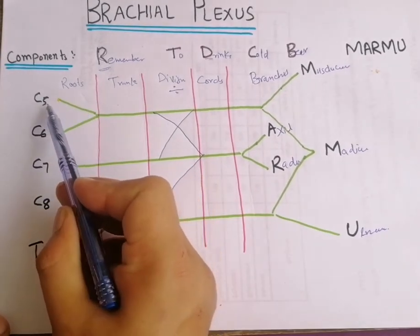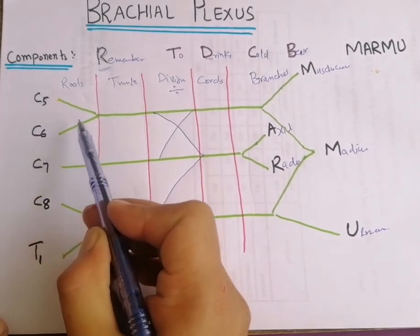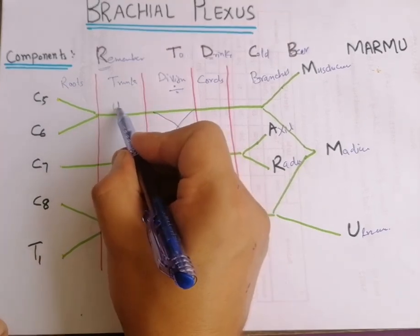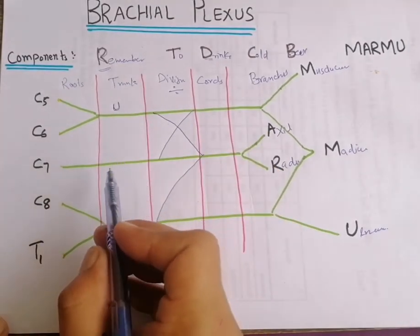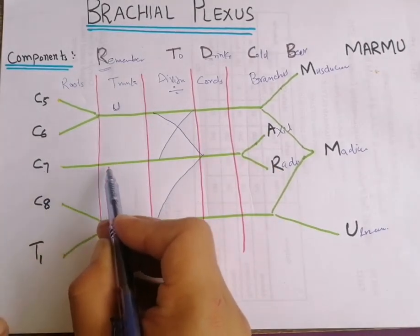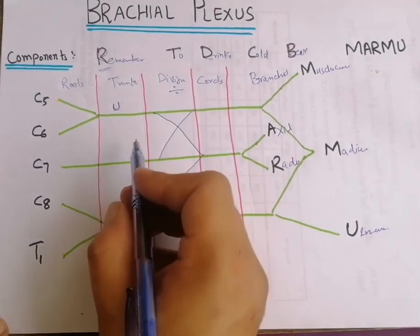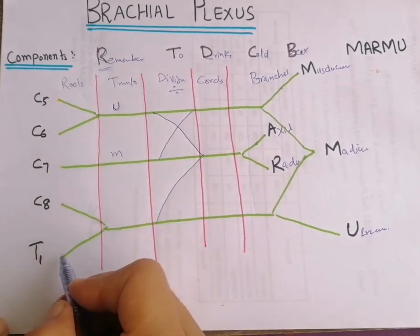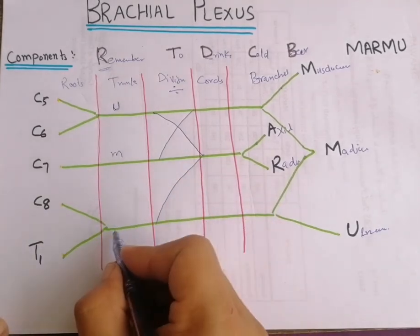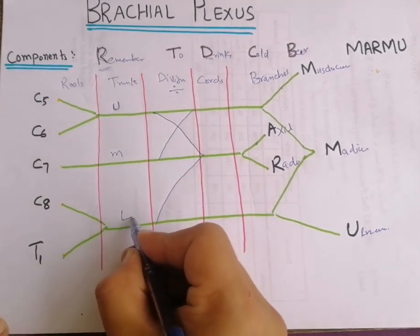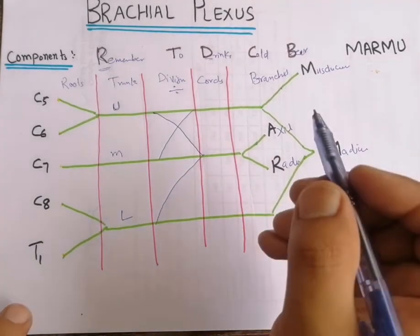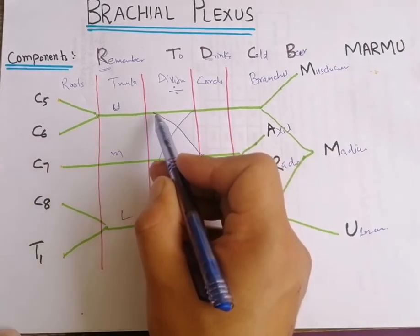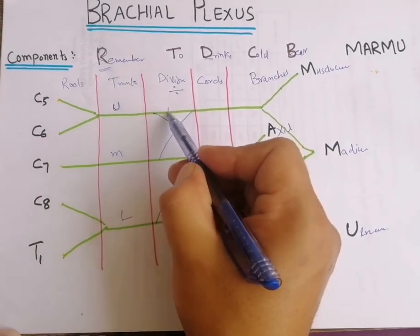Now understanding the brachial plexus: the roots of C5 and C6 combine to give the upper trunk. C7 root is continuous as the middle trunk. C8 and T1 roots combine to form the lower trunk.